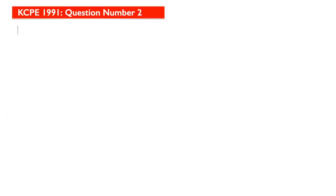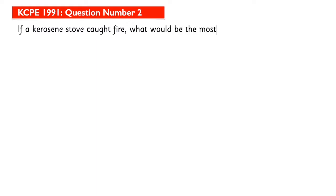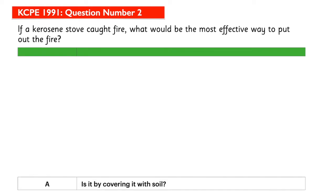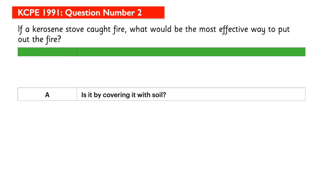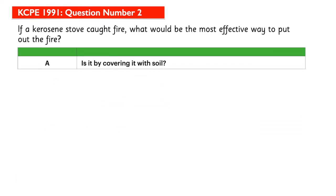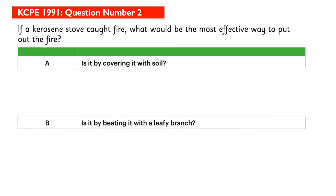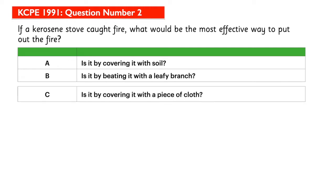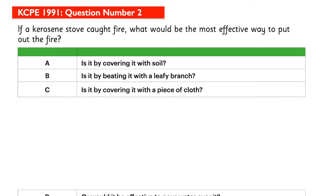If a kerosene stove caught fire, what would be the most effective way to put out the fire? Is it by covering it with soil, by beating it with a leafy branch, by covering it with a piece of cloth, or would it be effective to pour water over it?